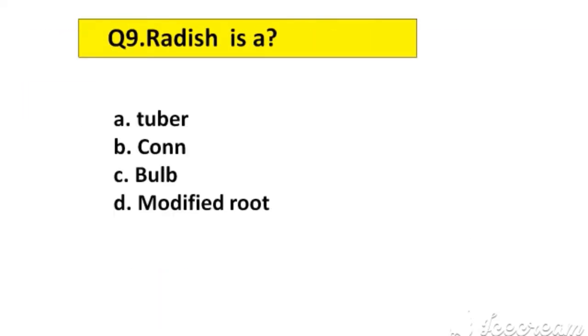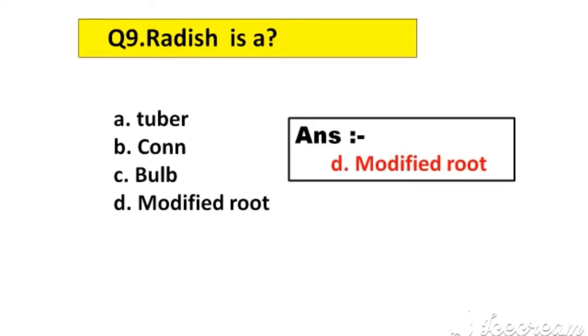Question number 9. Radish is a: A. Tuber, B. Corn, C. Bulb, D. Modified root. The right answer is option D, Modified root.